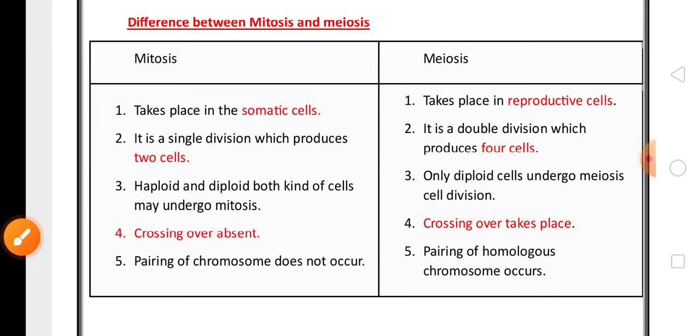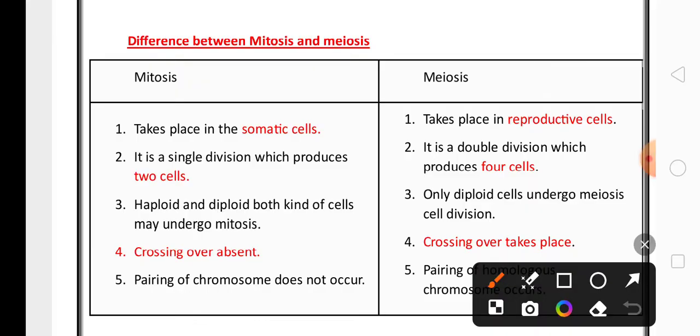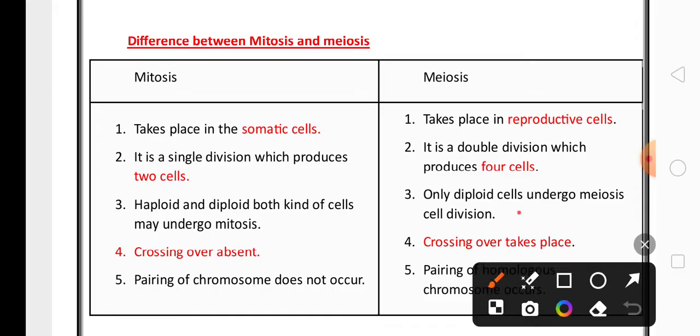Finally, for five marks, the difference between mitosis and meiosis is highly important. Mitosis takes place in body cells, also called somatic cells. Meiosis occurs in reproductive cells. Mitosis produces two daughter cells, meiosis produces four haploid cells. In mitosis, the two cells are diploid. Both haploid and diploid cells can undergo meiosis, whereas only diploid cells can undergo mitosis.